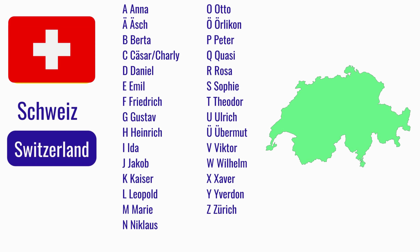Und auch beim Schweizer Buchstabieralphabet sagen wir den Buchstaben und dann 'wie' und den Namen. A wie Anna. Ä wie Äsch. B wie Bertha. C wie Cäsar oder Charlie. D wie Daniel. E wie Emil. F wie Friedrich. G wie Gustav. H wie Heinrich. I wie Ida. J wie Jakob. K wie Kaiser. L wie Leopold. M wie Marie. N wie Niklaus. O wie Otto.